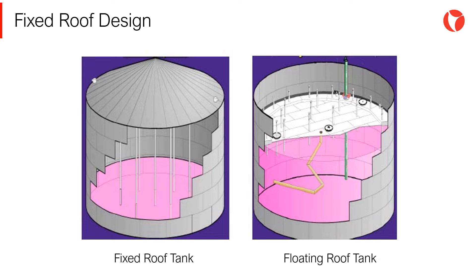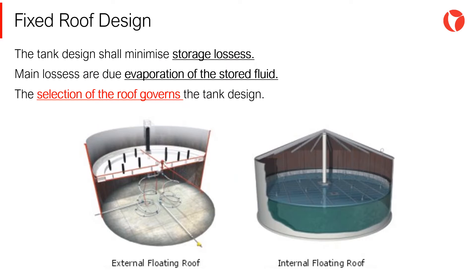When the fluid to be stored is a product that tends to evaporate at the operating temperature of the tank, a vapor chamber is created between the level of the liquid and the tank roof. To eliminate this vapor chamber, floating devices resting on the liquid are used. The tank design shall minimize storage losses, as the main losses are due to evaporation of the stored fluid. The selection of the roof governs the design.